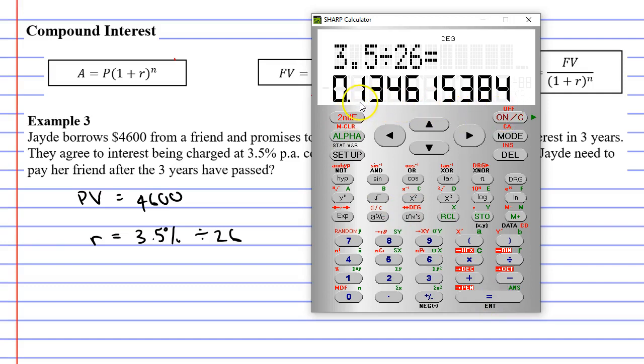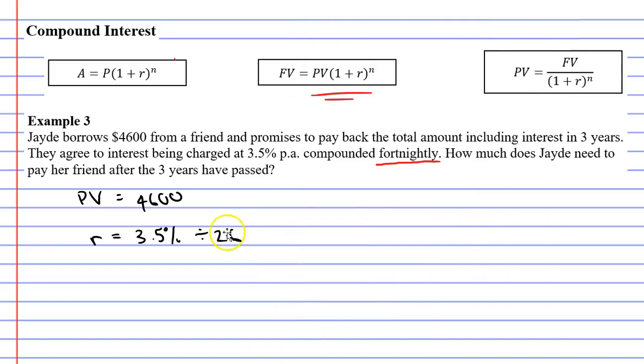We don't want to write this nasty decimal down. Instead, we can write it as a fraction. We'll write it as 3.5 over 26, which is the same as dividing by 26. This is our interest rate per fortnight. Remembering that we need to take the interest rate and divide it by 100.